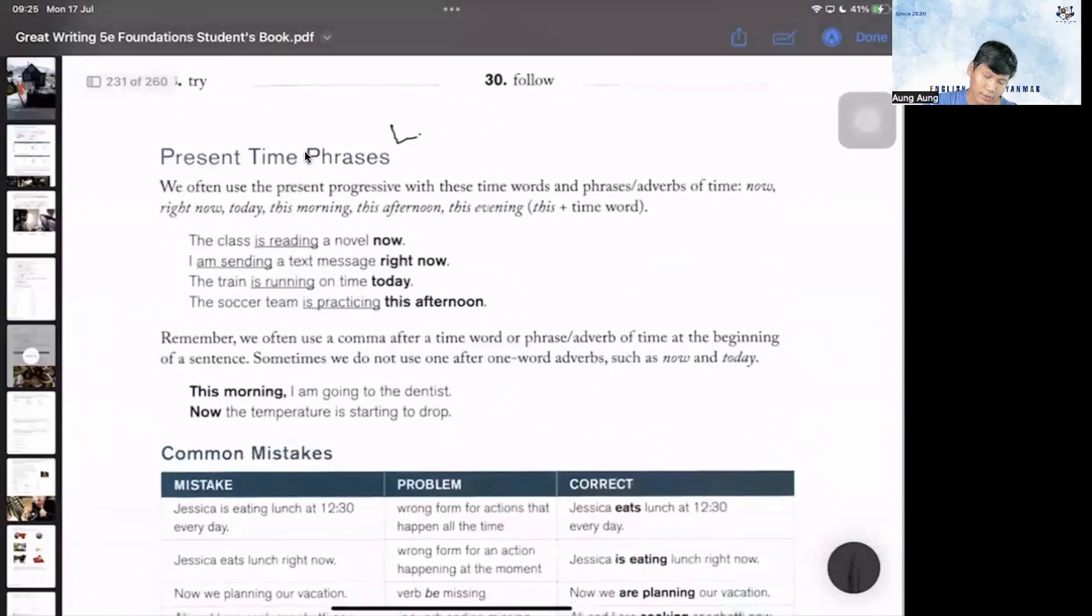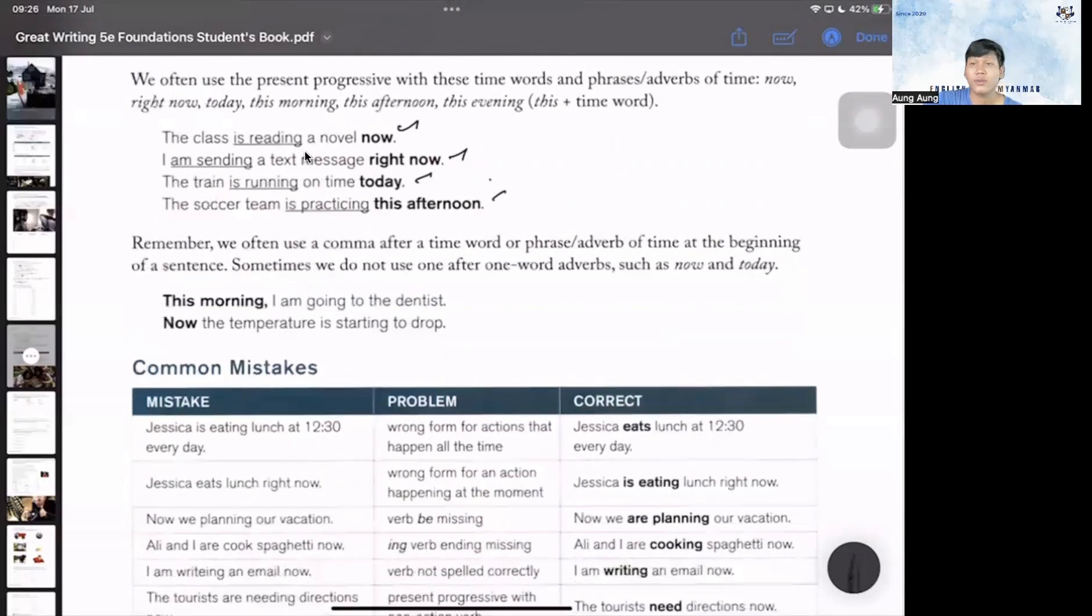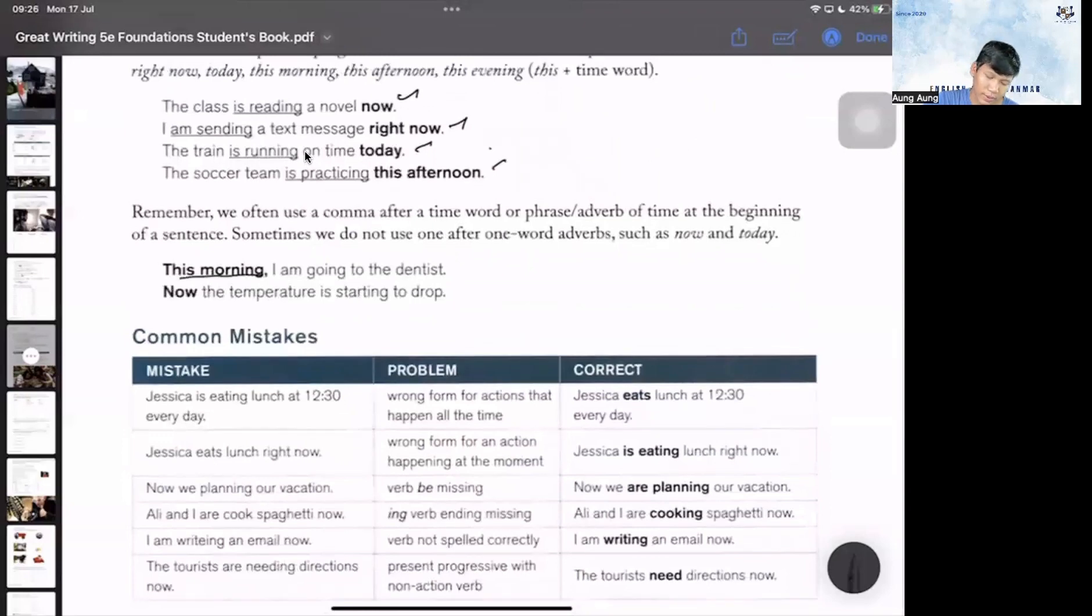Present time phrases. The class is reading right now. Now, right now, today, this afternoon - these are time words we use with present continuous. I am sending a text message right now. The train is running on time today. The soccer team is practicing this afternoon.